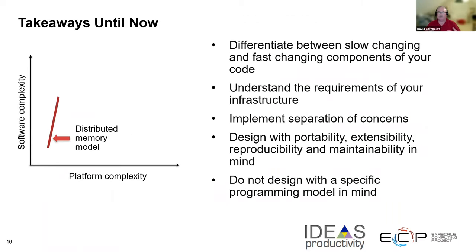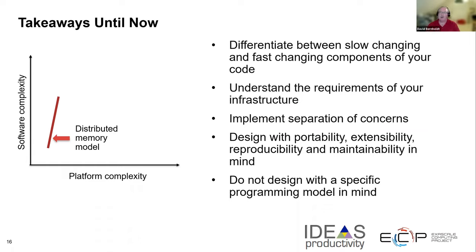So what have we learned so far? Thinking about this distributed memory model of computing, it's useful to differentiate between the slowly changing infrastructure and the more quickly changing science elements of your code. You really want to do a good job of understanding the infrastructure requirements and then implement separation of concerns as you're designing the whole system. You also want to think about portability, extensibility, reproducibility, and maintainability as you do the design work. And you want to not focus on a particular programming model when doing the initial design.